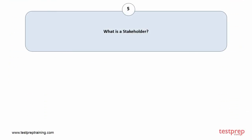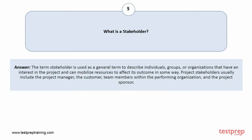Question number 5: What is a stakeholder? Your answer is: The term stakeholder is used as a general term to describe individuals, groups, or organizations that have an interest in the project and can mobilize resources to affect its outcome in some way. Project stakeholders usually include the project manager, the customer, team members within the performing organization, and the project sponsor.